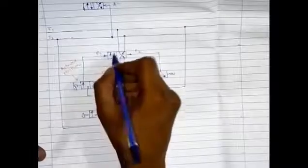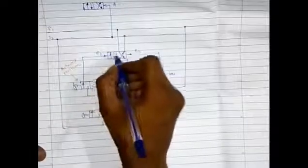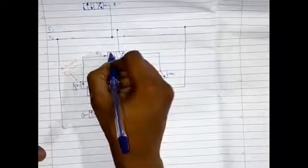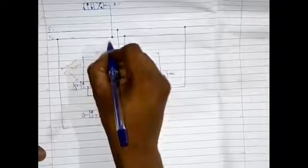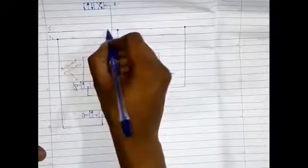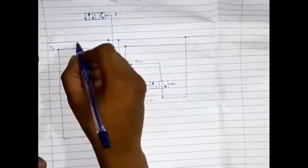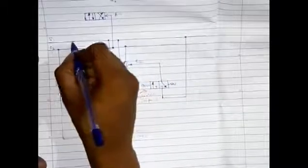Then this energy goes to the first position of the energy valve, that is E1. The actuated position is always shown by the first position, hence we attach the pipeline to the first position. Then this energy goes to the first position, that is S1. Then the S1 pipeline gives energy to the A-plus.